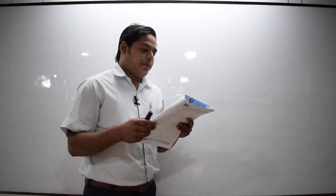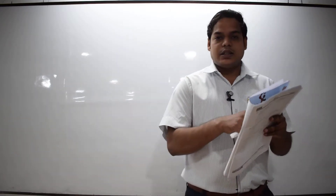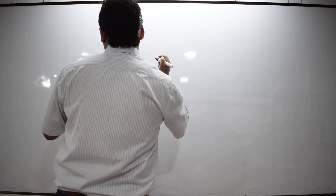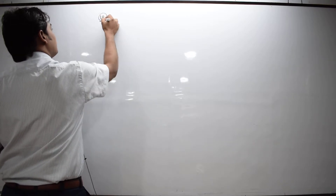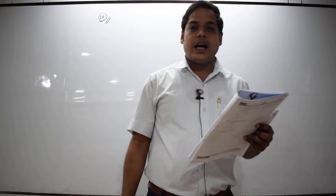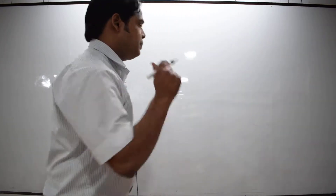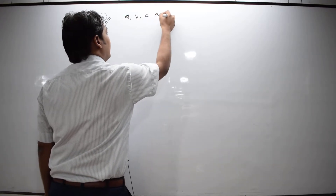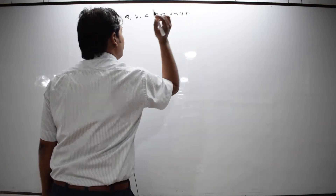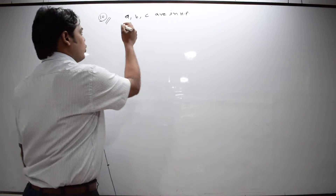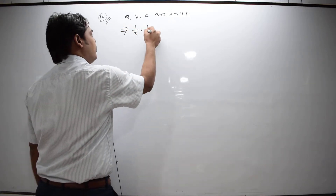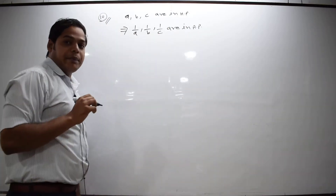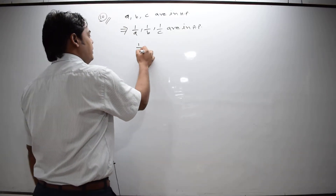In the previous session we discussed nine questions, and today we will discuss question number 10. If non-zero numbers A, B, C are in HP, it is given that A, B, C are in HP. If three numbers are in HP, then their reciprocals 1/A, 1/B, 1/C lie in AP.